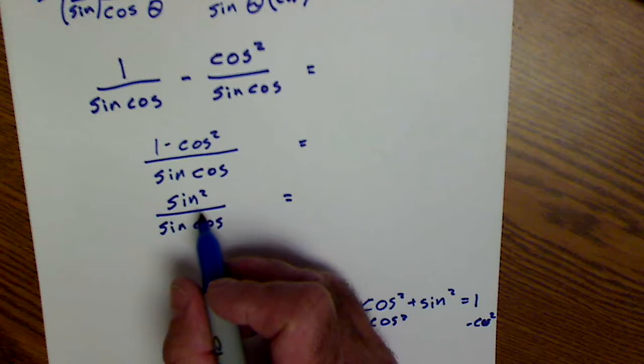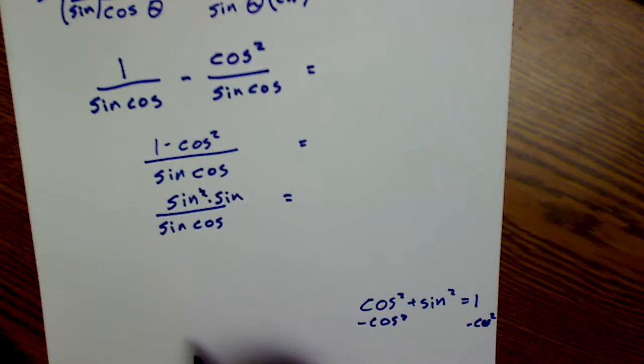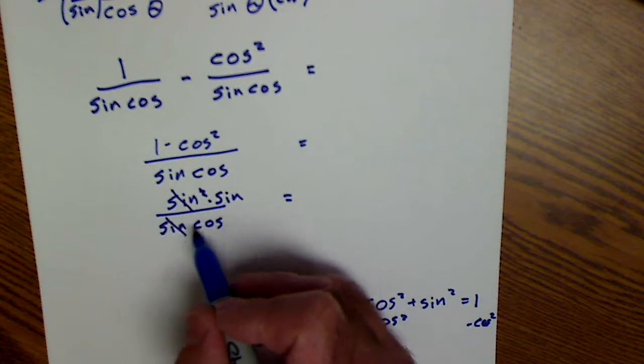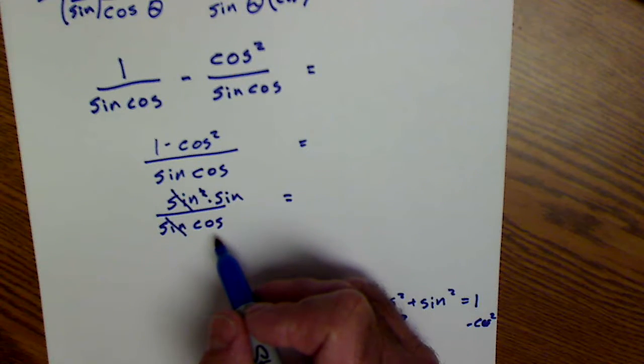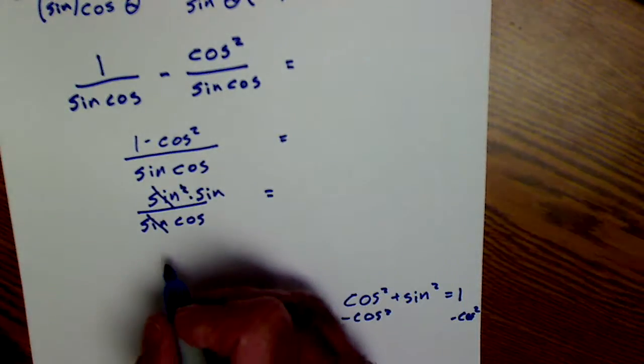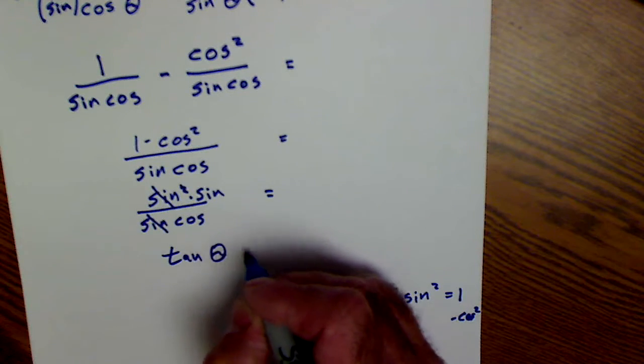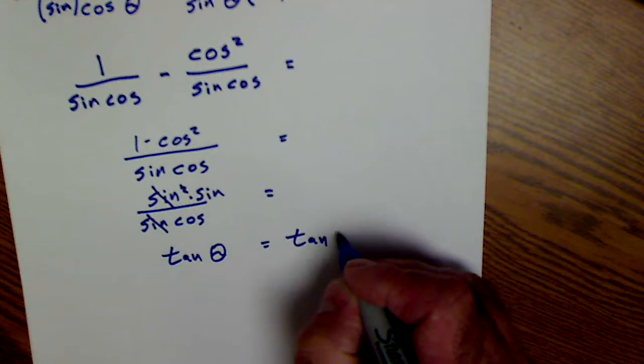Sine squared is the same thing as sine times sine. So I'm going to get rid of that square and make it sine times sine. These will cancel. And that leaves me with a sine over a cosine. And that's what I was asked to prove. Sine over cosine is a quotient identity. And tangent of theta is equal to tangent of theta.